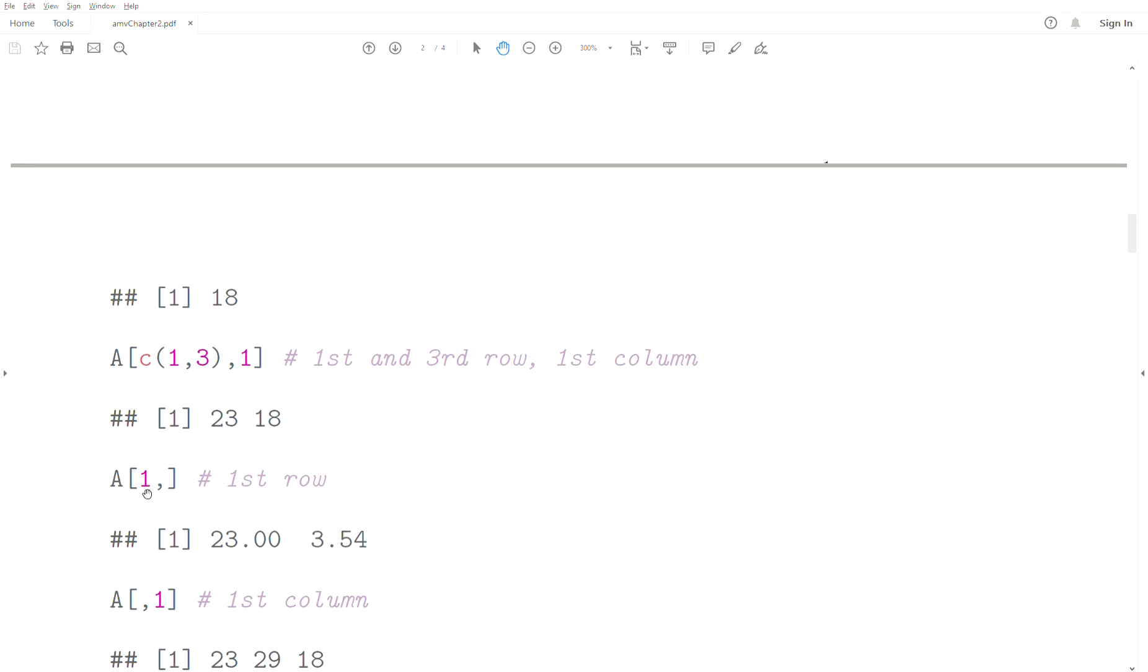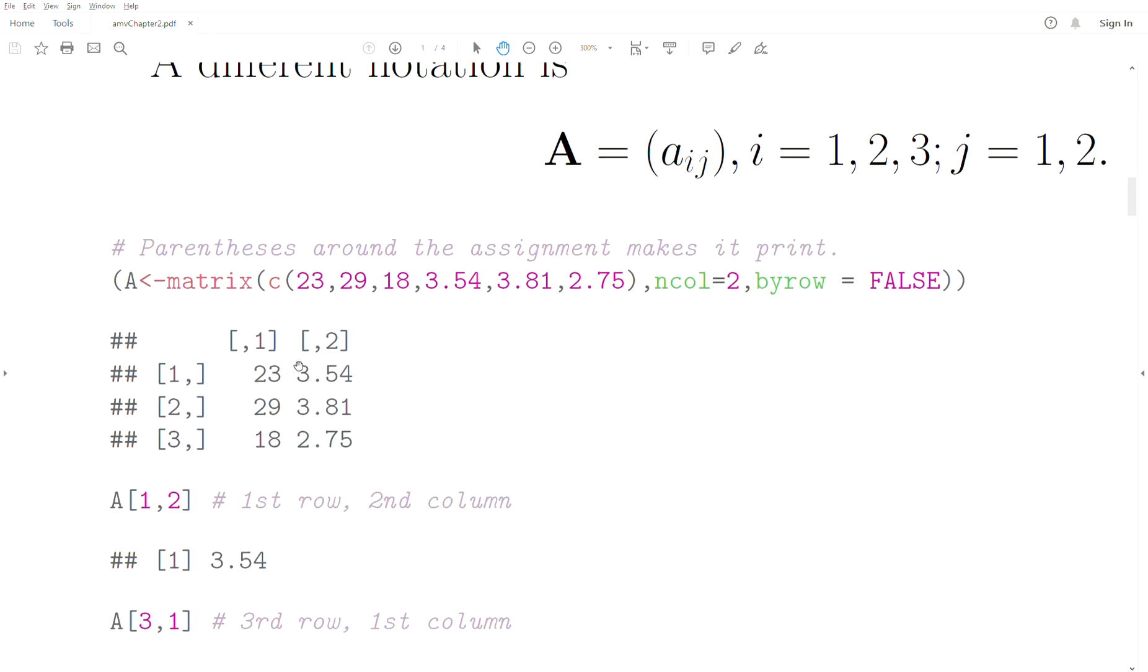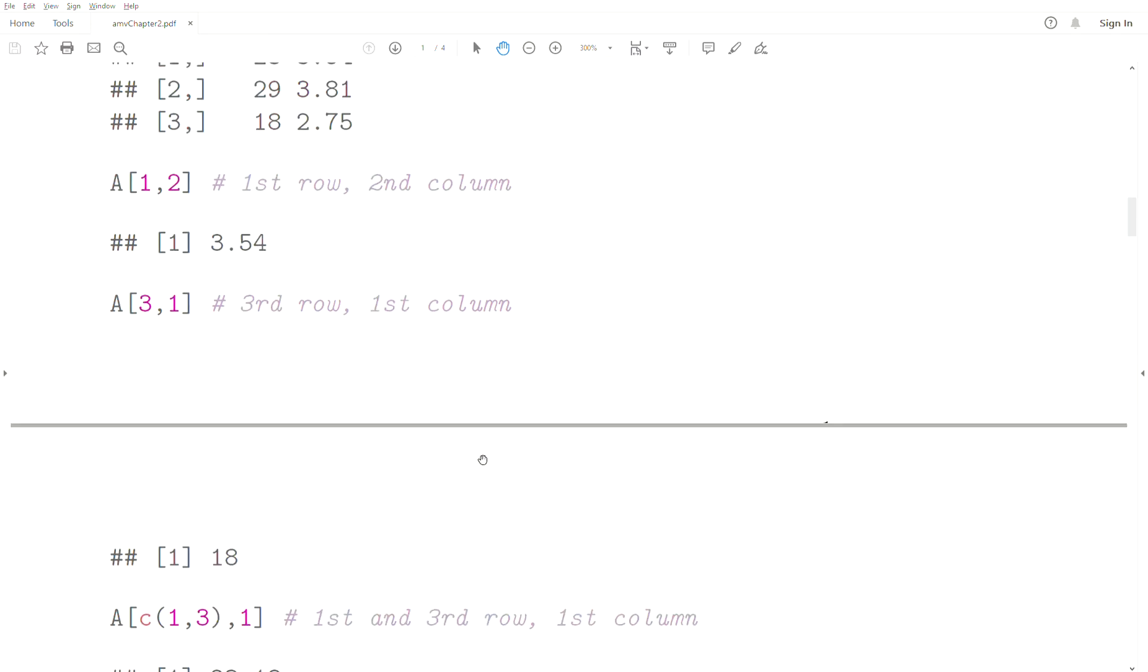Here, if it's blank, it means take everything. So we want the first row, every column, and we get 23 and 3.54. Since there's no row number, it takes everything. We want the first column, so that's 23, 29, 18—it goes down this first column.